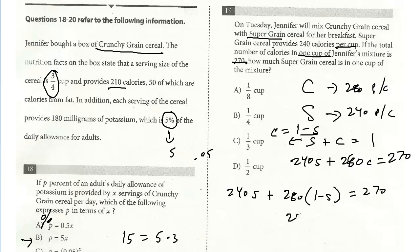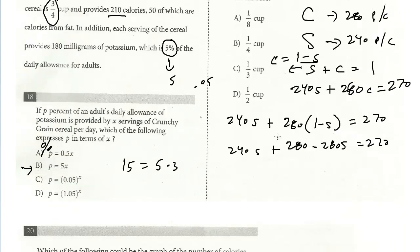So I have 240s plus 280. And now I'm going to plug this in for the c, one minus s equals 270. And so this is going to be 280 minus 280s. And this was 240s equals 270. So again, just have to be careful with your arithmetic here. And so if I add this, this is going to be negative 40, but I'll bring it to the right side. So it's going to be positive 40s. And then the last step is 270, subtract that from both sides, and I get 10.